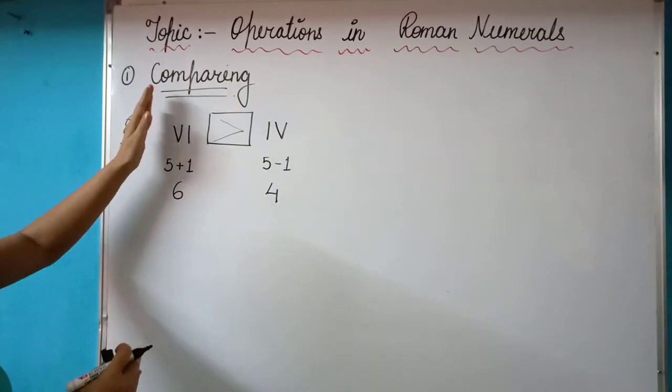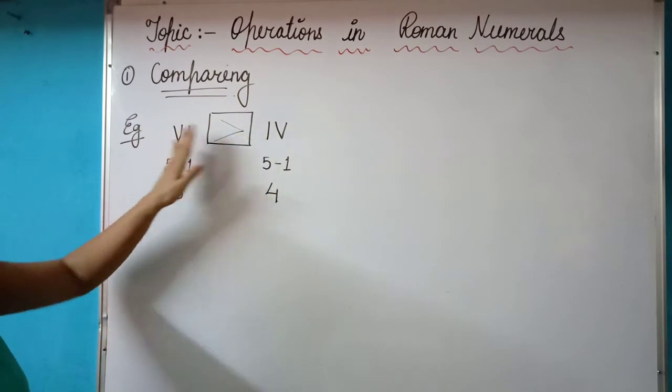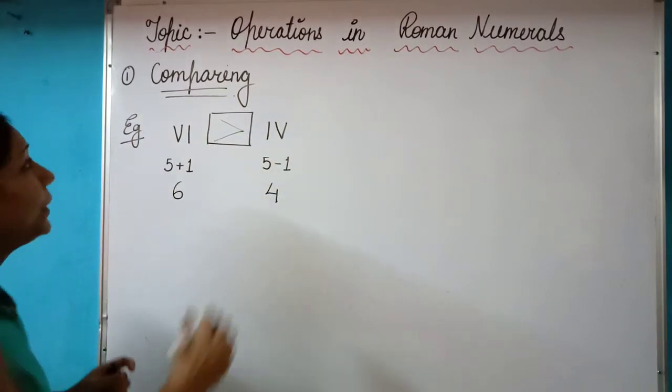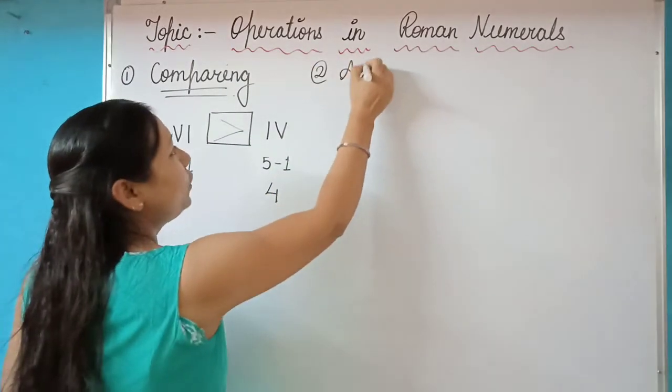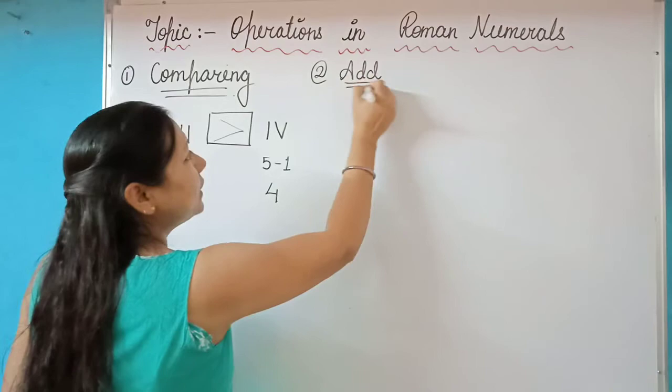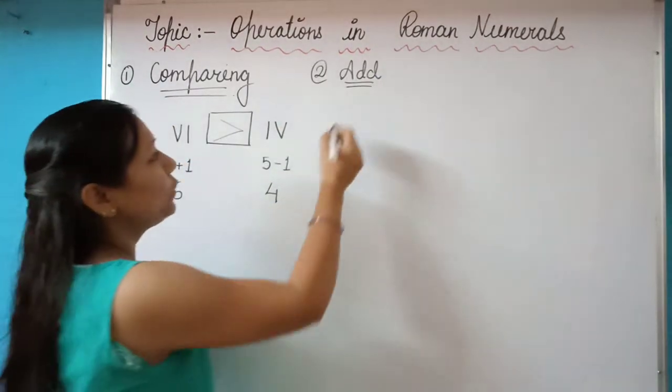This is how we can compare any Roman numerals by converting them into Hindu Arabic form. Similarly, suppose you have to add two Roman values.